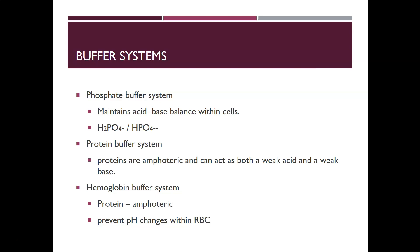The other buffer systems include the phosphate buffer system, which maintains acid-base balance within the cells using dihydrogen phosphate and monohydrogen phosphate. The protein buffer system works because proteins are amphoteric — they can act as both weak bases and weak acids, picking up either a hydroxide ion or a hydrogen ion. Since we have a large amount of protein in our blood, this is by volume the more abundant buffer. Hemoglobin is also a buffer system — as a protein it is amphoteric, picking up excess hydrogen or hydroxide ions, and it mainly prevents pH changes within the red blood cell.